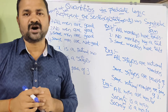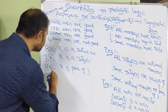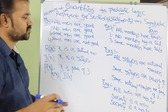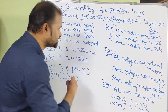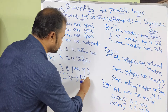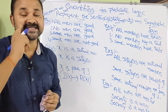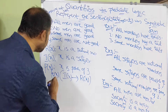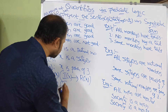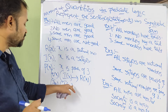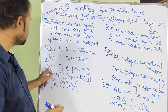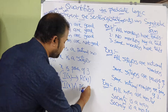First sentence: 'All integers are rational numbers.' All means for all x — integers means I(x), implies — rational numbers means R(x). So: ∀x(I(x) → R(x)). Second sentence: 'Some integers are powers of 3.' Some means existential quantifier — integers means I(x), and since it's 'some' we use AND — powers of 3 means P(x). So: ∃x(I(x) ∧ P(x)).